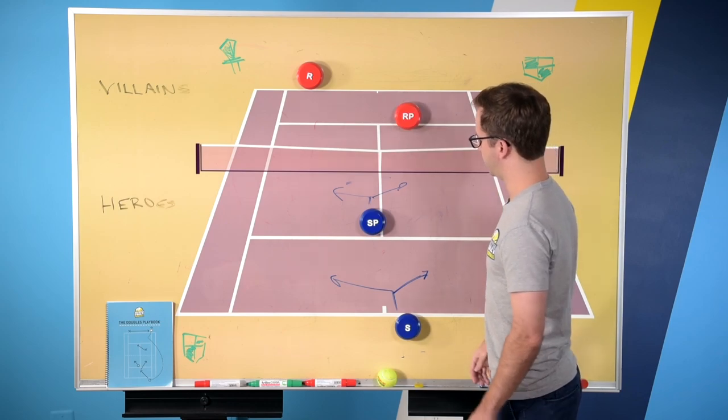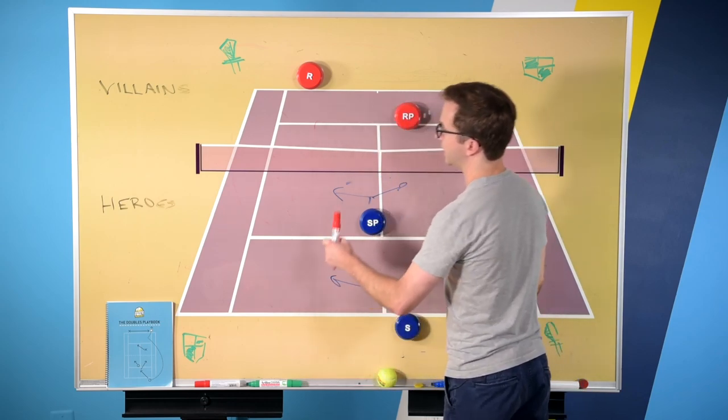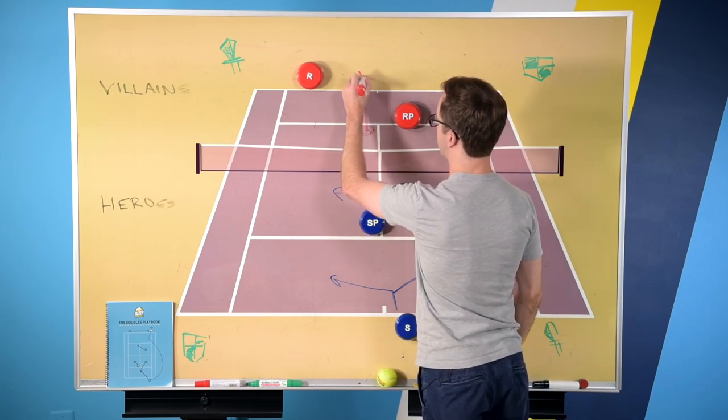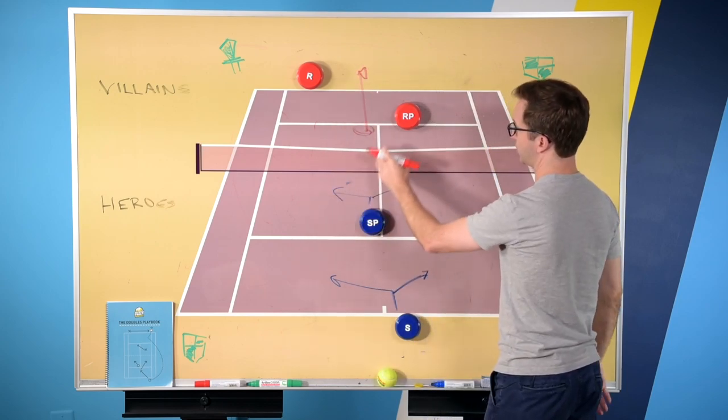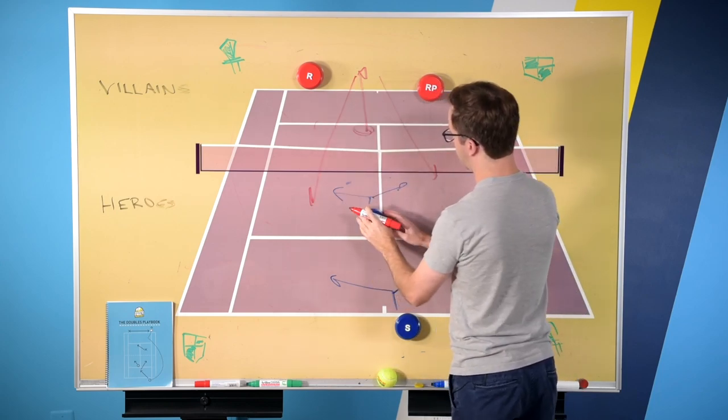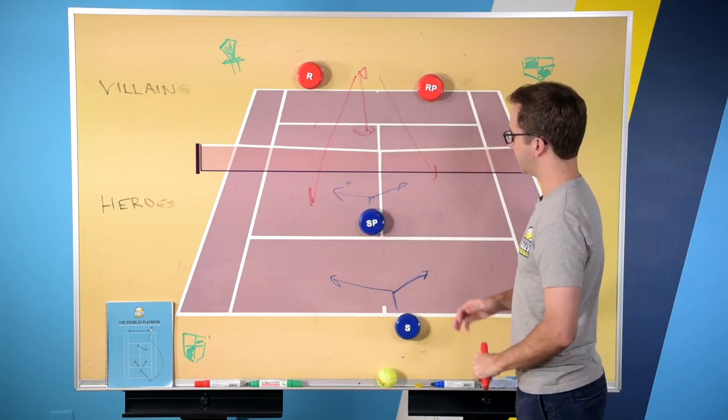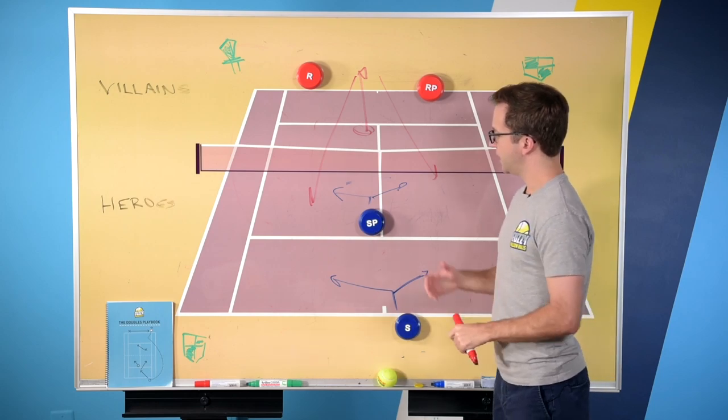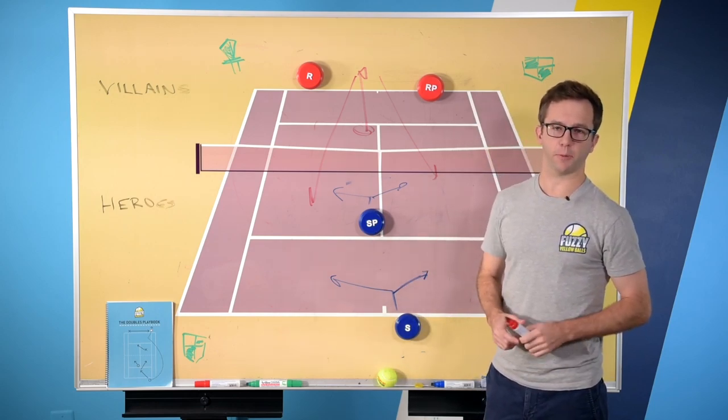And typically, the place you'd want to serve on the deuce court here is T-serve to cut down the angles, and then the ensuing shot like this becomes more likely for your partner to be able to pick off. So those are some things to keep in mind when you're playing the I-formation.